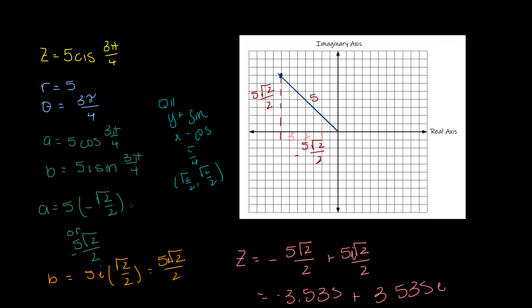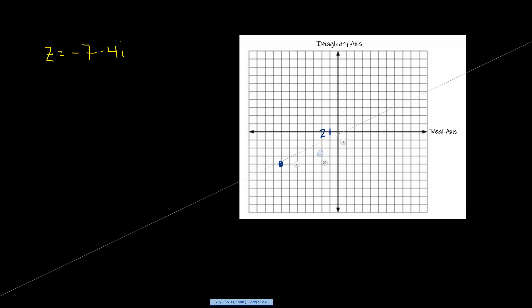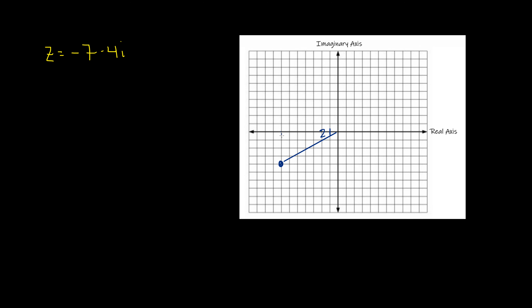Let's look at another example. How do you express z equals negative 7 minus 4i in polar form? Looking at the graph, using each block as one unit: going 7 left and 4 down, we're looking at a point in the third quadrant. I need to know the hypotenuse, which will be our r, and the angle theta.